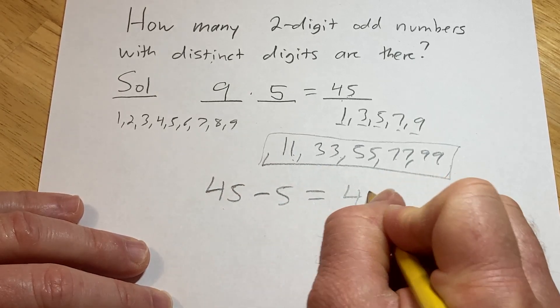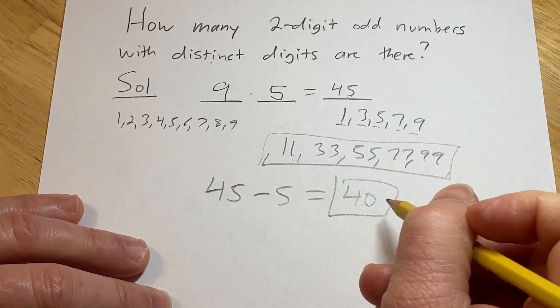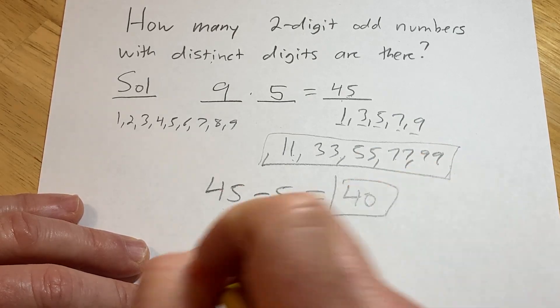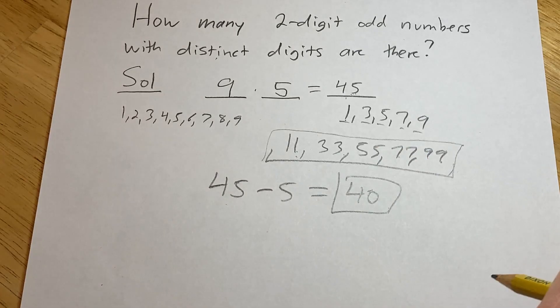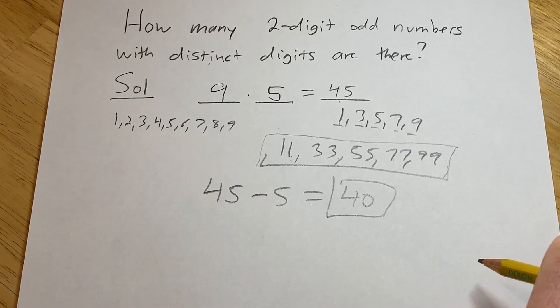You get 40, and that's the number of two-digit odd numbers with distinct digits. Kind of a cool problem. I hope this has been helpful. Good luck.